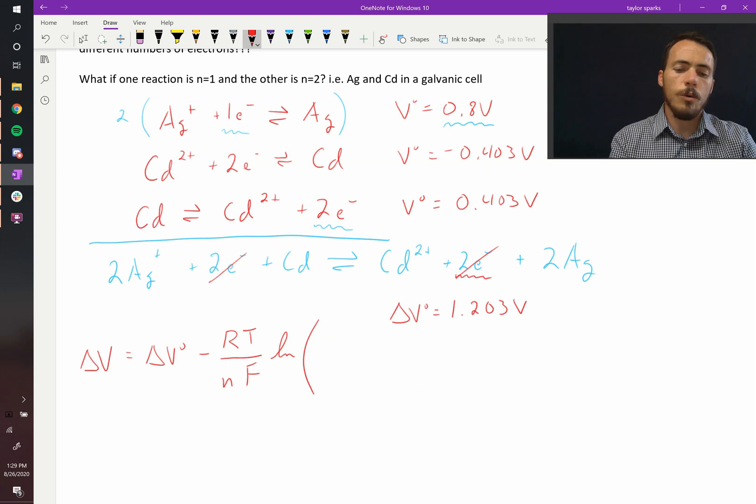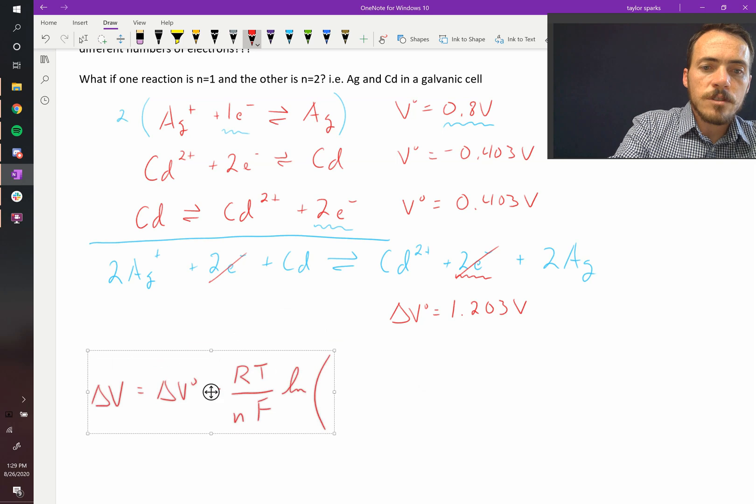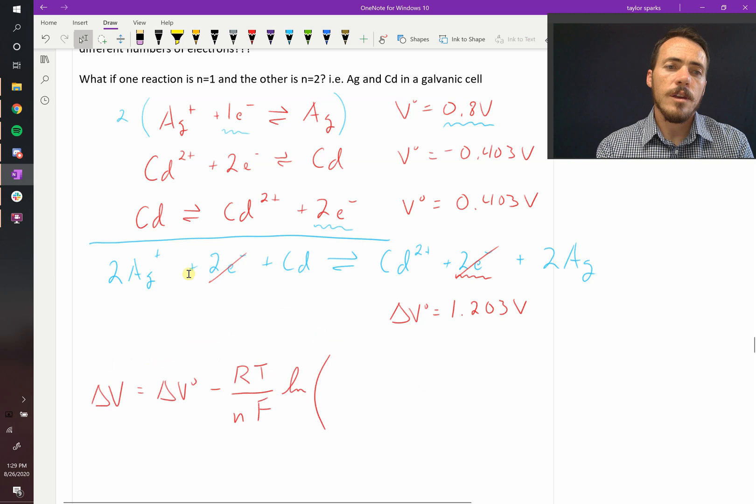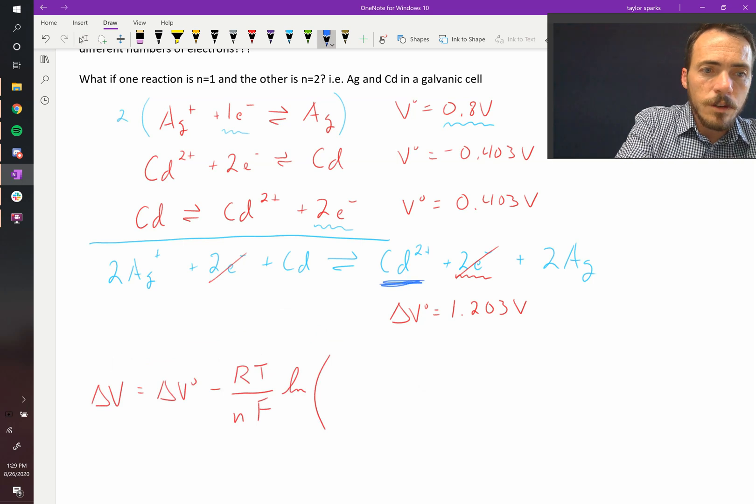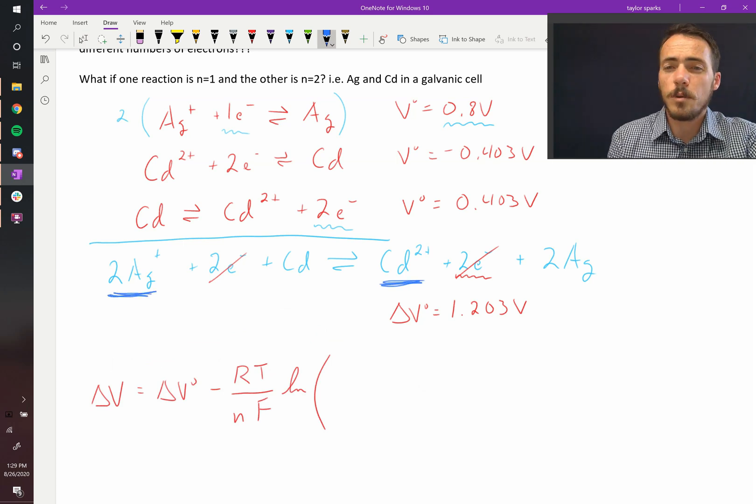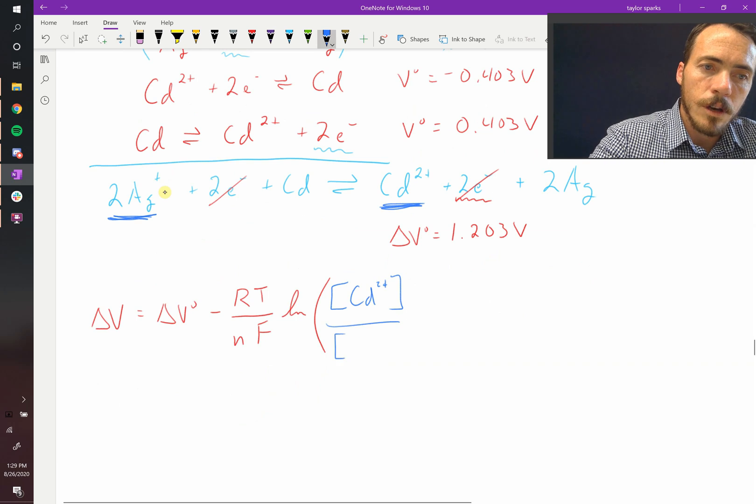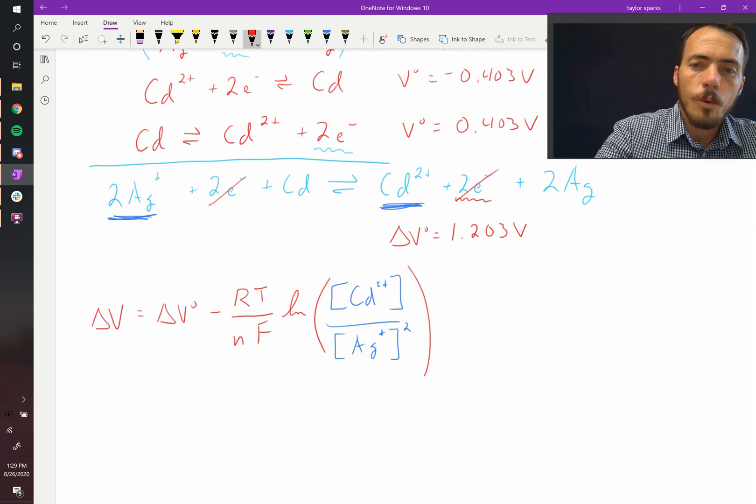Now, reaction quotient is always products over reactants. But in this case, we'd said previously that for solids and liquids, that the activity is just equal to one. So the term would go to zero. Here, it is solids and liquids, but these are ions in solution. So their activity is not one. Instead, we use the concentration of our dissolved species. That's this one here and this one here. Those are both dissolved species. So we're going to use the concentrations of those. It's going to be the concentration of the products. So the concentration of cadmium two plus over the concentration of silver plus.